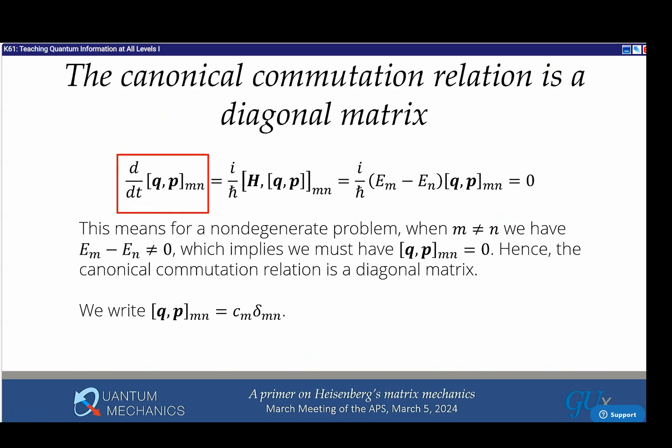You can also show it's a diagonal matrix. Use the Heisenberg equation of motion: the time derivative equals the commutator of H with the canonical commutation relation. That equals (E_m - E_n) times that and equals zero. For a non-degenerate problem where E_m never equals E_n unless m equals n, the commutator [q,p] must be a diagonal matrix.